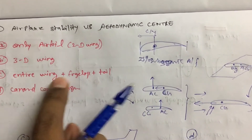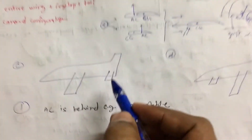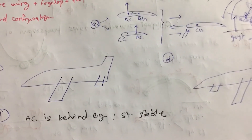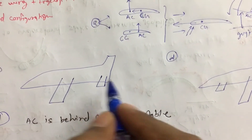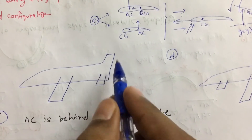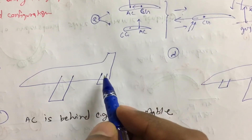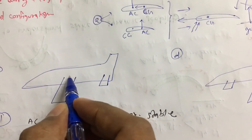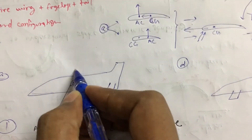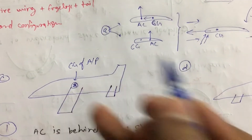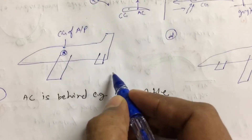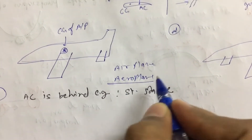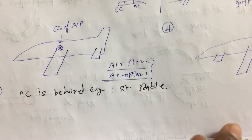Next: entire wing plus fuselage plus tail — the case of a complete airplane. Things are a little different, but the logic is exactly the same. For every different part — the wing, the tail, the fuselage — you will have different CGs. The combined CG will lie somewhere. This is the CG of the entire airplane. By the way, some people say 'airplane' and some say 'aeroplane' — both are the same, one is British English and one is American English.